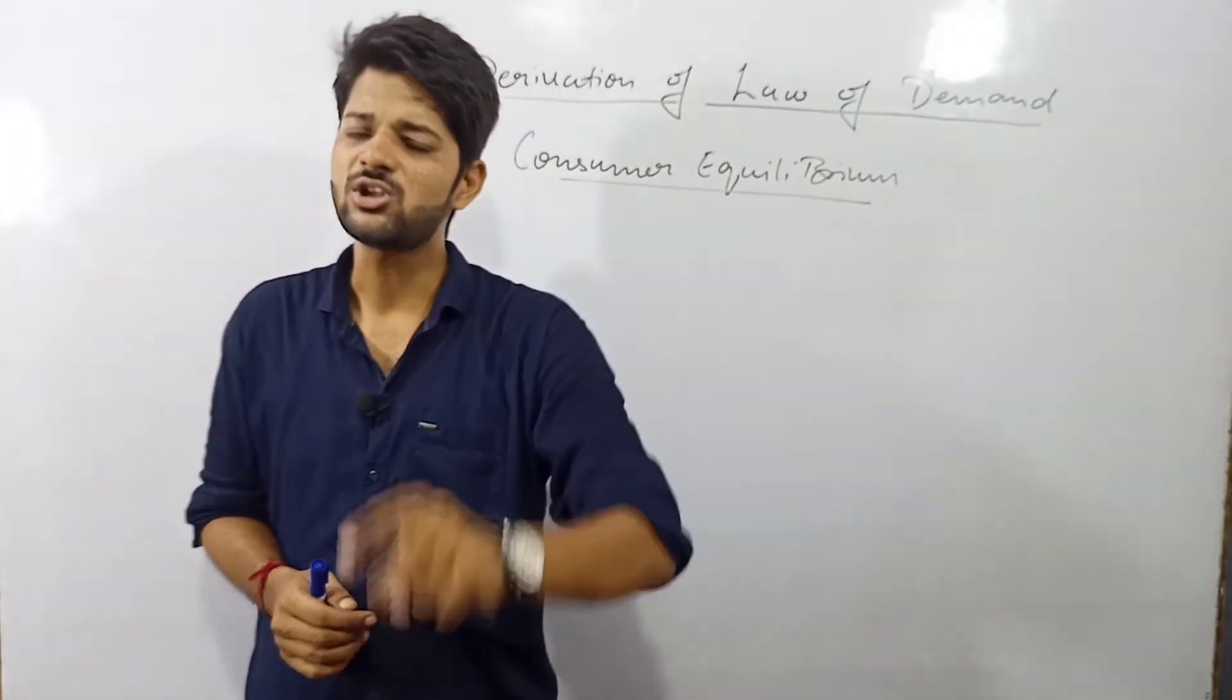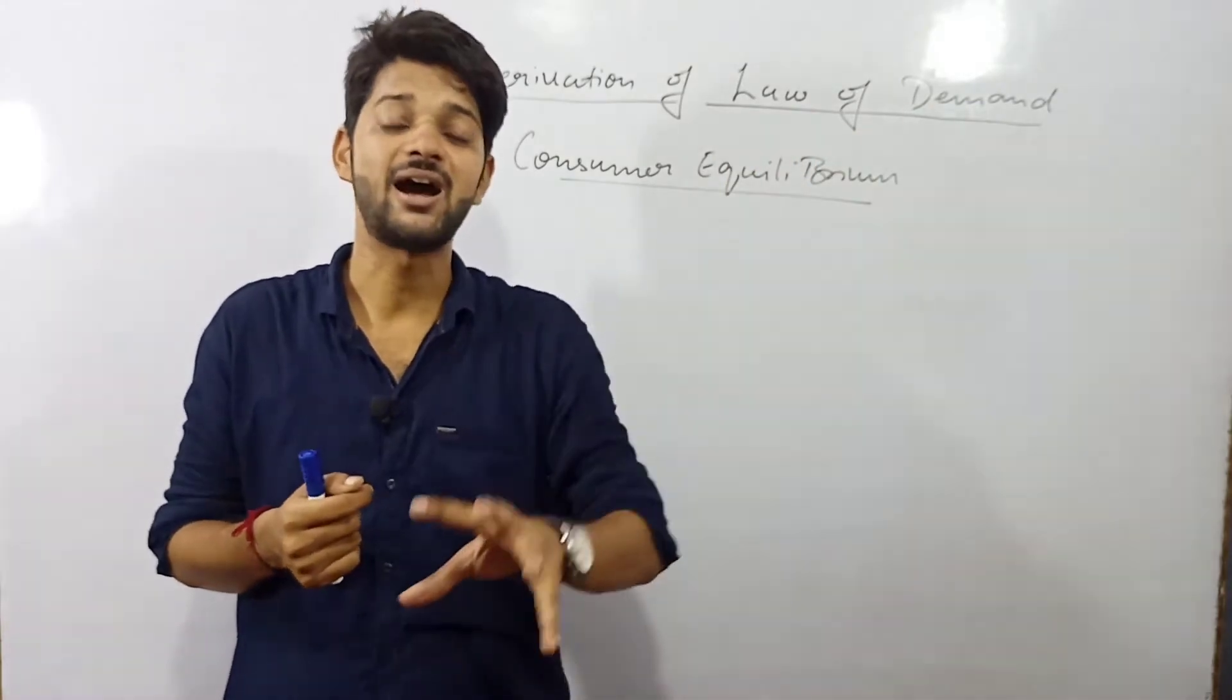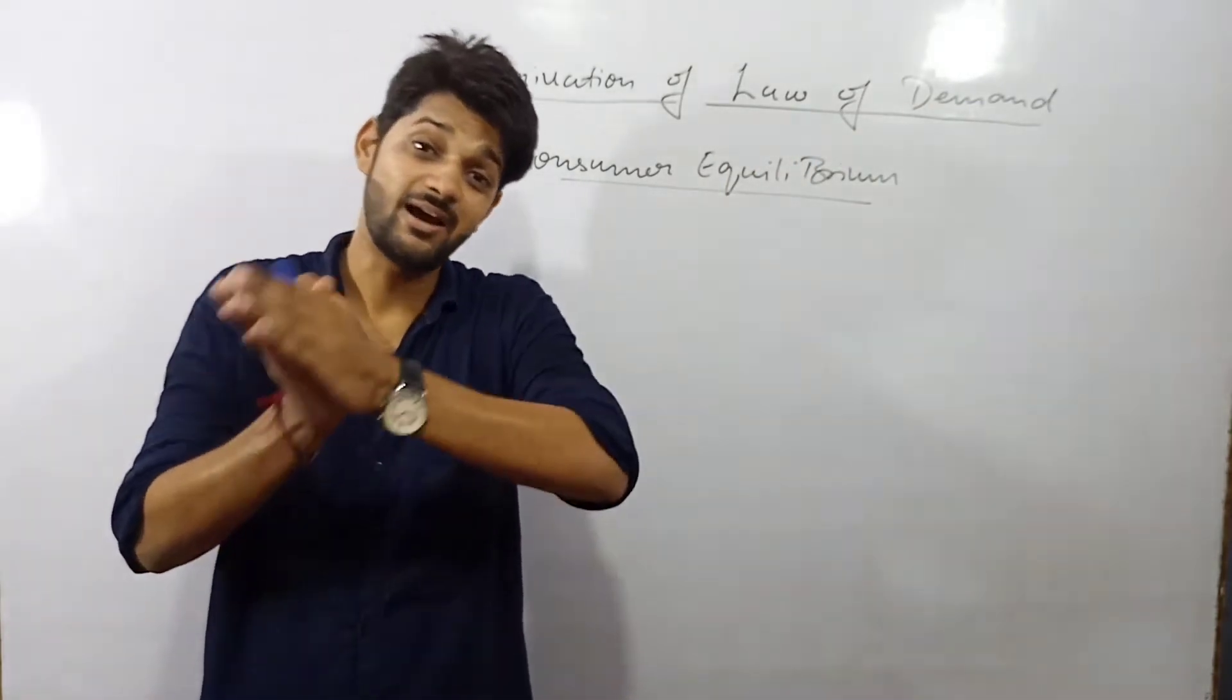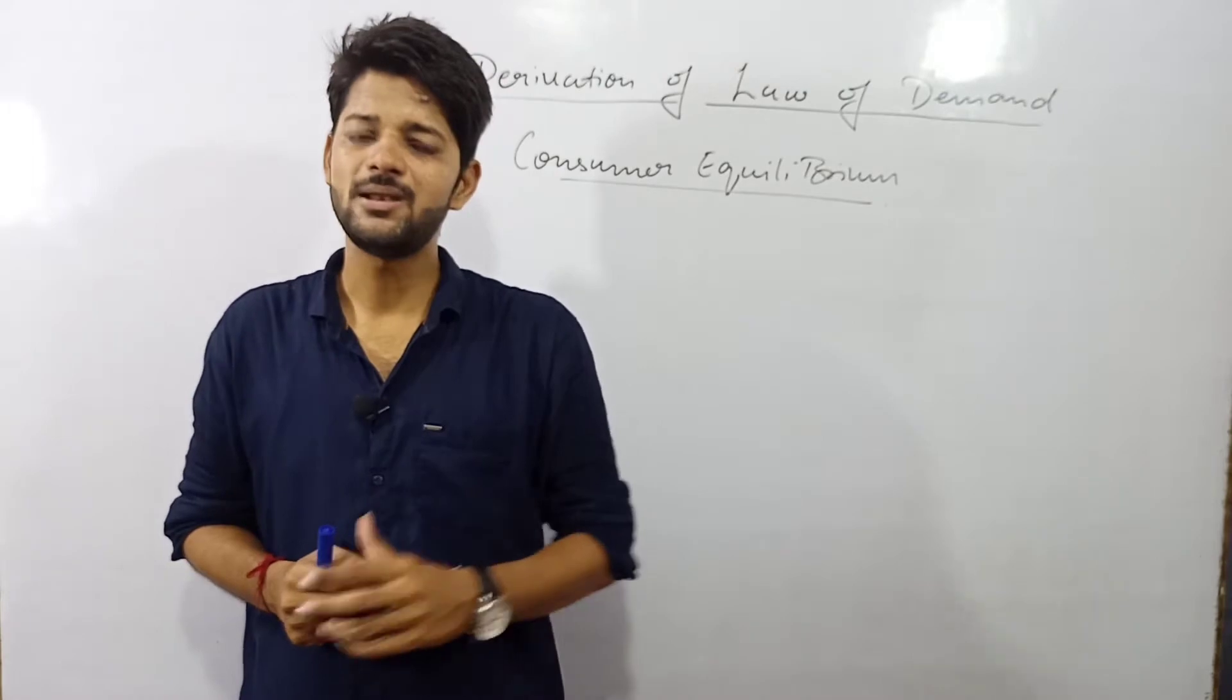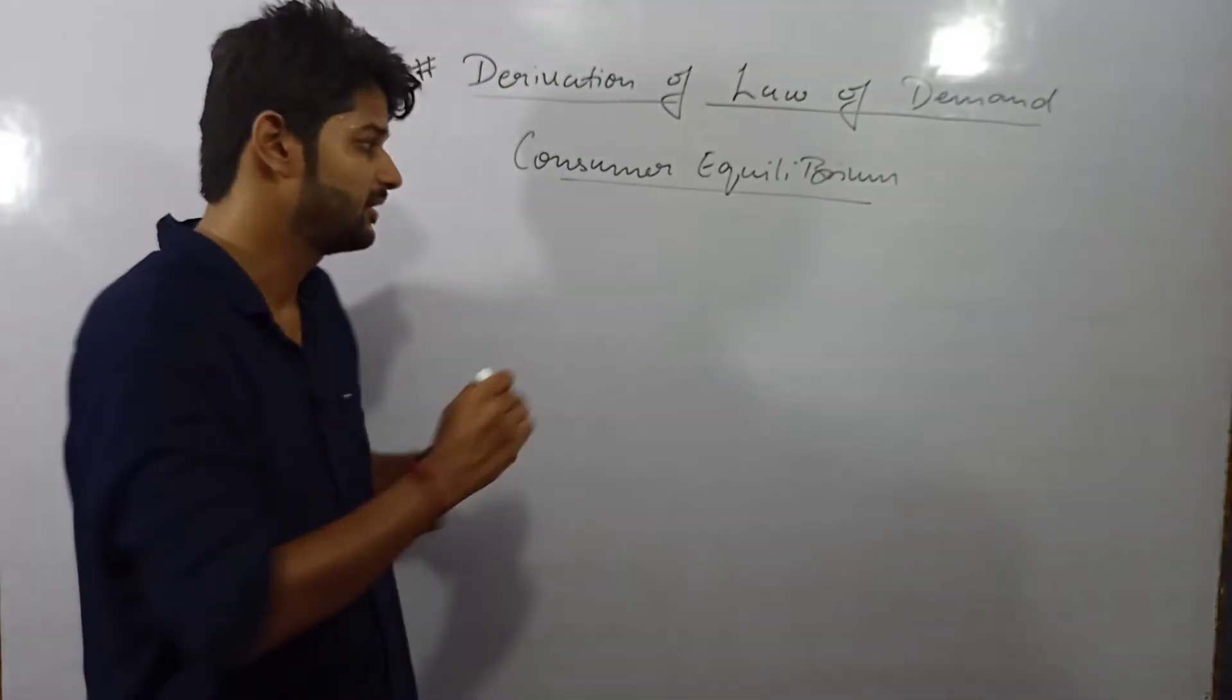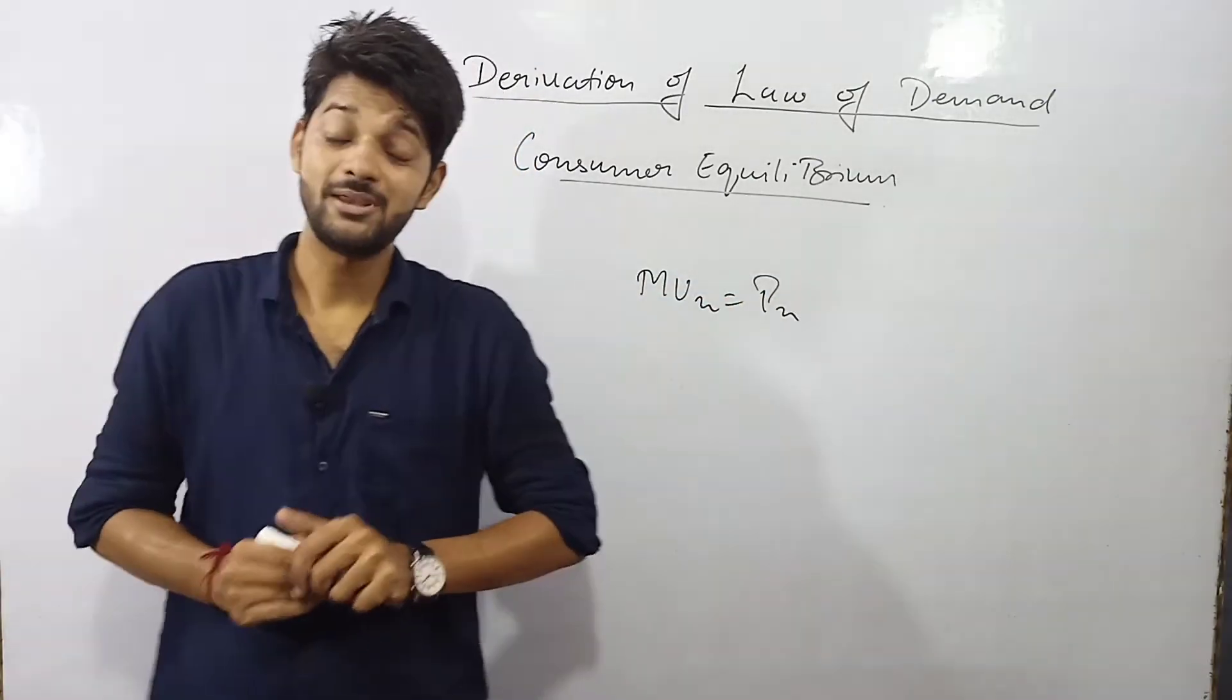So the derivation of law of demand is from consumer equilibrium. The law of demand is derived from consumer equilibrium. In consumer equilibrium you learned in case of one commodity that consumer will be in the state of equilibrium when the MUX is just equal to PX.